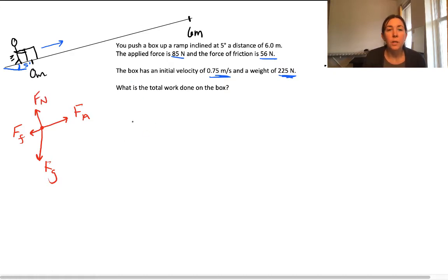The net work or the total work will be the work done by all of the forces. So the work done by the normal force plus the work done by the applied force plus the work done by the force of friction plus the work done by gravity. In this case, the angle between the normal force and the direction of travel is 90 degrees. Perpendicular forces do no work, so this work will be equal to 0.